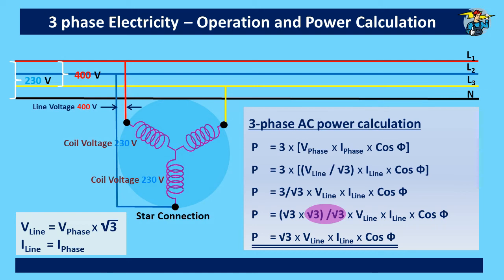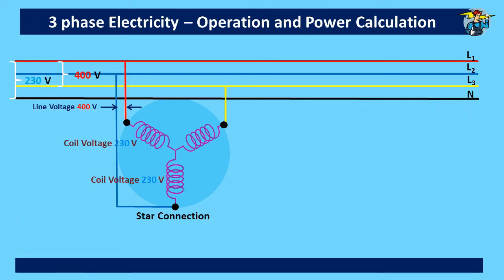Only one square root three remains on top now, and the final equation for three phase power in watts is P = √3 × V_line × I_line × cos φ.